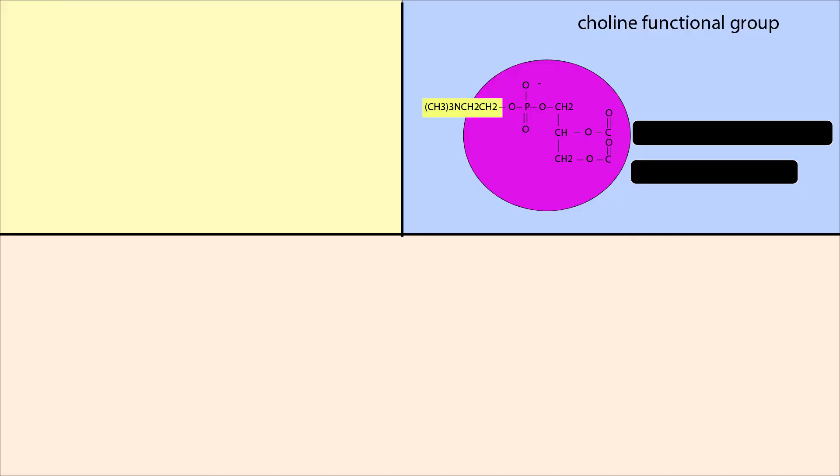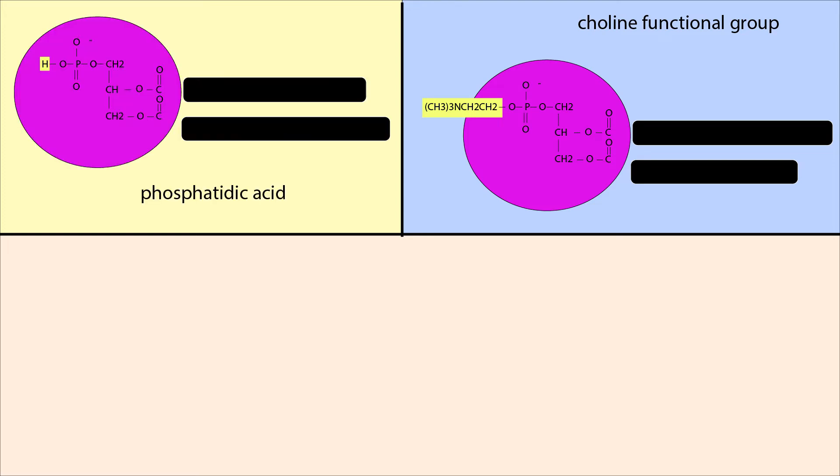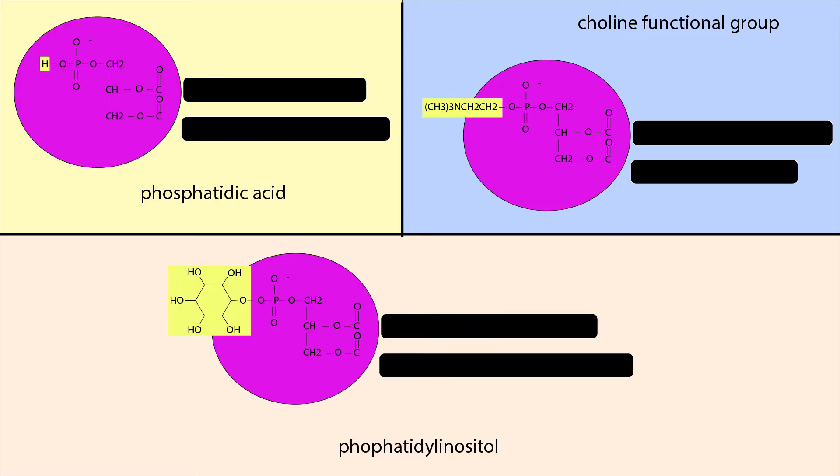Most commonly, they have a choline group attached, but several others also exist, including phosphatidic acid, which simply has a hydrogen attached, or phosphatidyl inositol, which can be phosphorylated in different ways to control cellular processes.